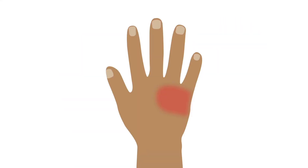On exam, there will be a lot of swelling and tenderness on the dorsal and ulnar side of the hand, just proximal to the fourth or fifth MCP joints. The problem with this kind of fracture is that it can be unstable and may have some degree of angulation or even rotation.